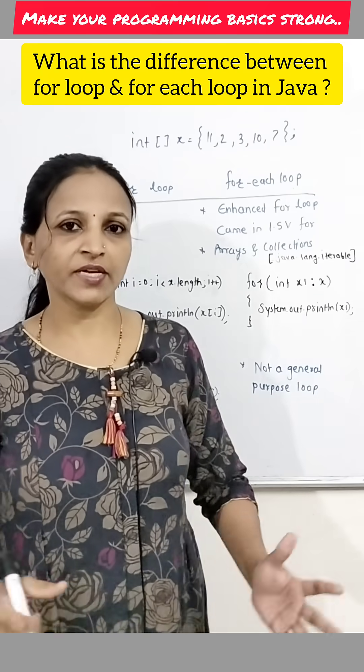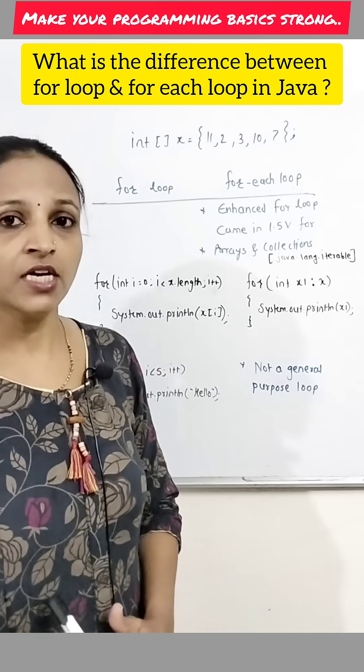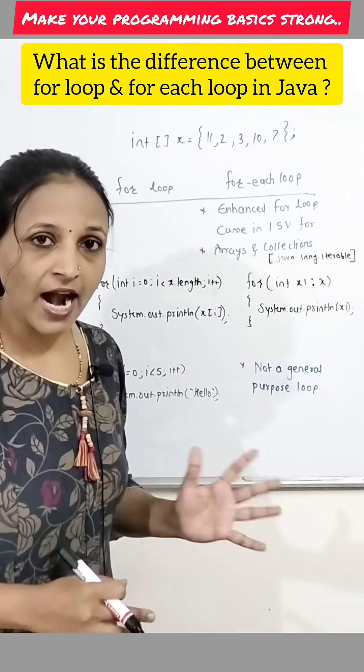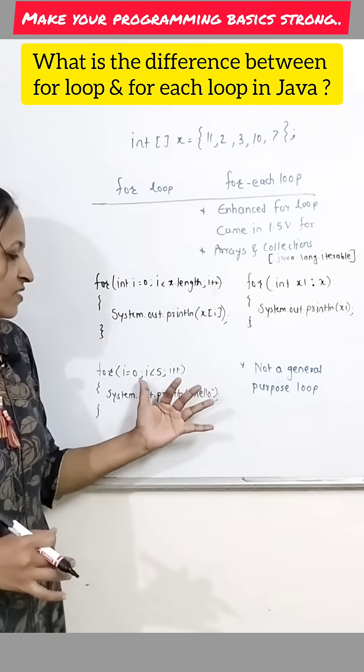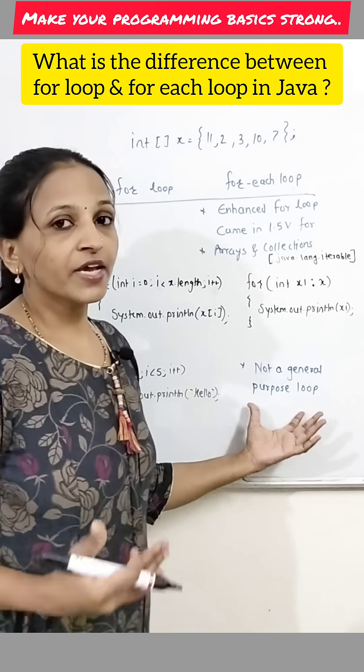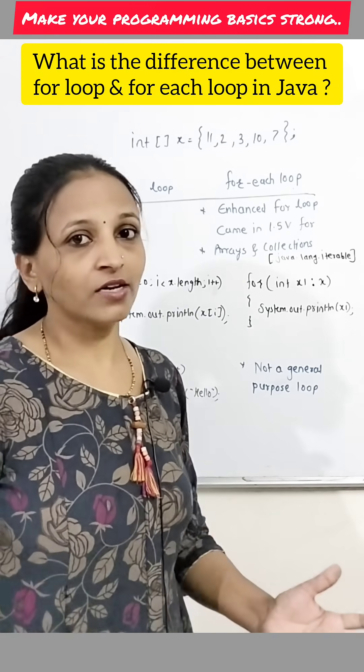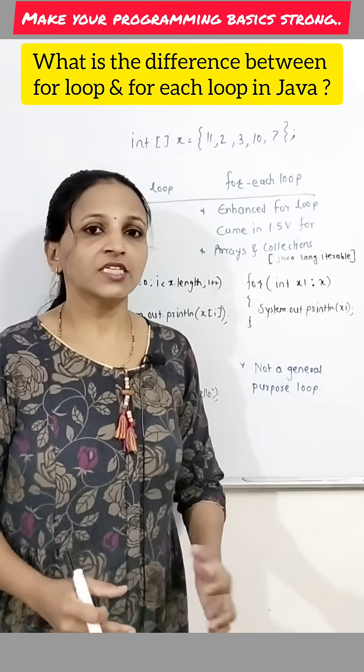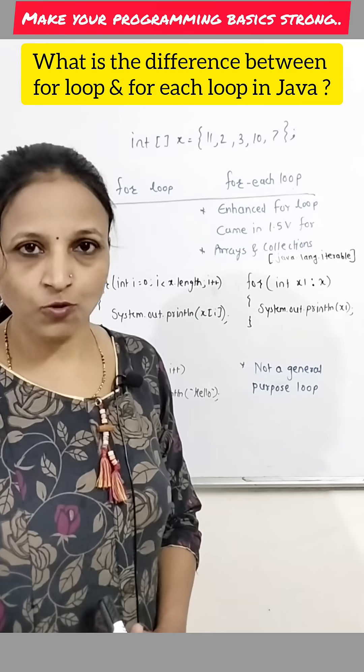Suppose you want to display hello message, find number of text onto the screen. Then we can use traditional for loop like for i equals to 0, i less than 5, i plus plus just display hello. But how we can use for each loop here? We can't use here for each loop means it is not a general purpose loop.